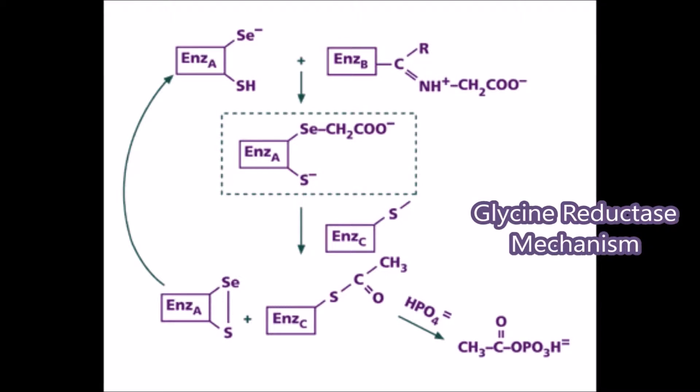Each time the bacteria could not reduce glycine to acetate, she associated it with the absence of an unknown protein A, denoted by a subscript A in the diagram. She conducted several experiments with the bacteria in order to determine which inorganic substance was necessary to produce more protein A and therefore regain activity of the enzyme. She found the inorganic mineral necessary to be selenium.